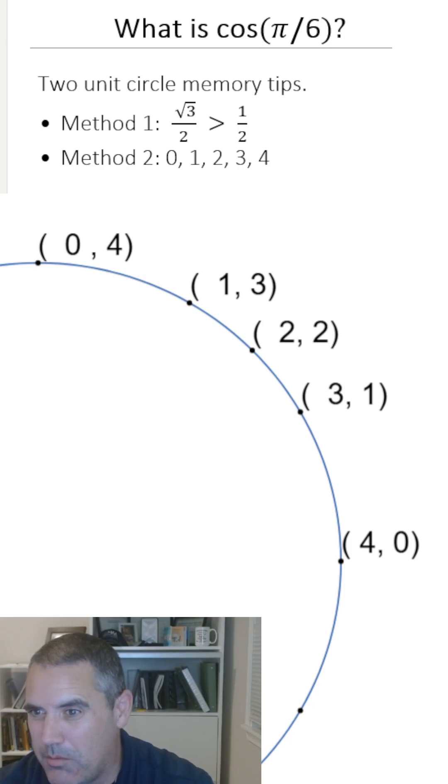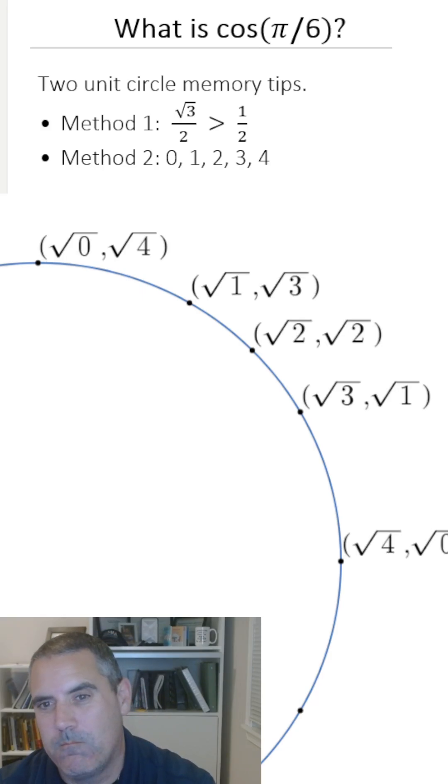And then take the square root of everything and divide by 2. So we're going to take all those numbers and take the square root. Done. Divide everything by 2. There's our answer.